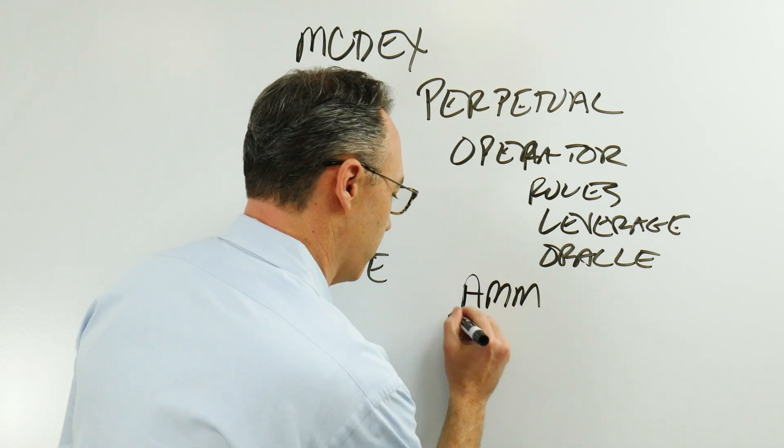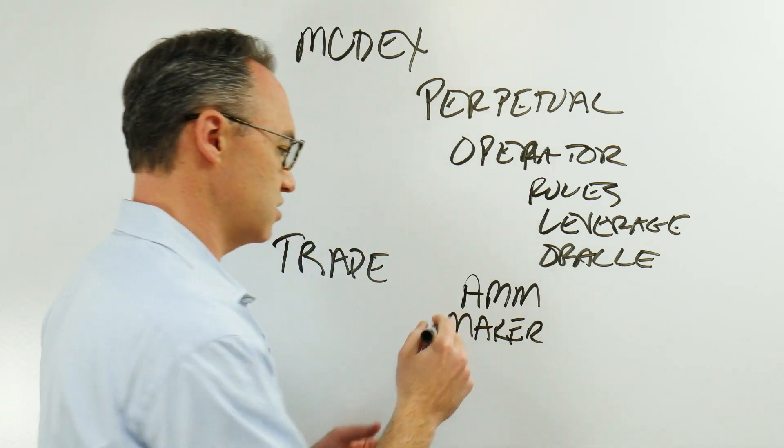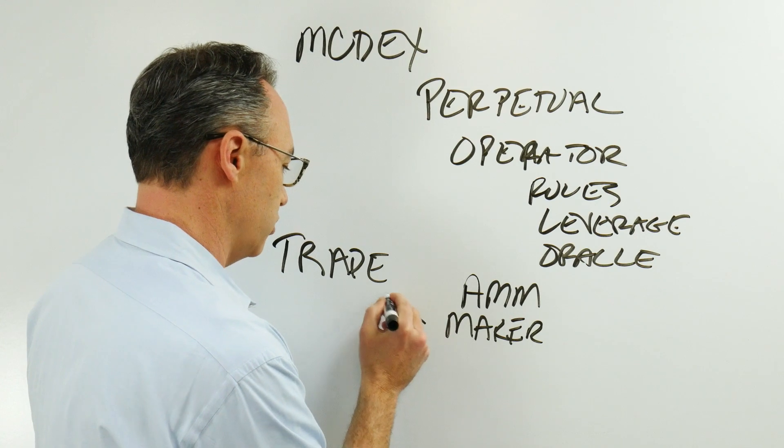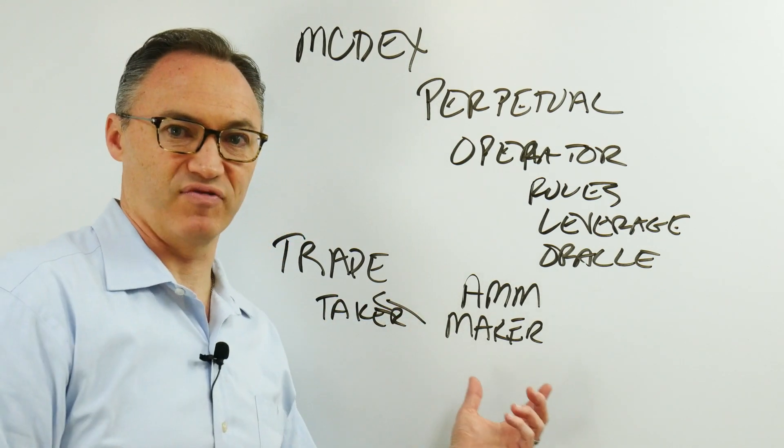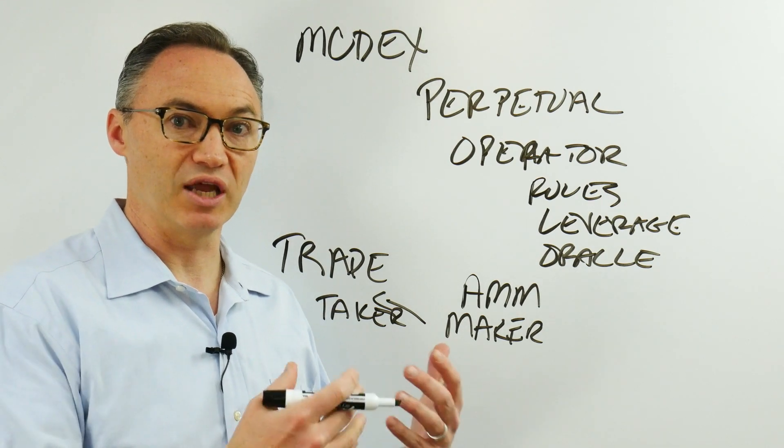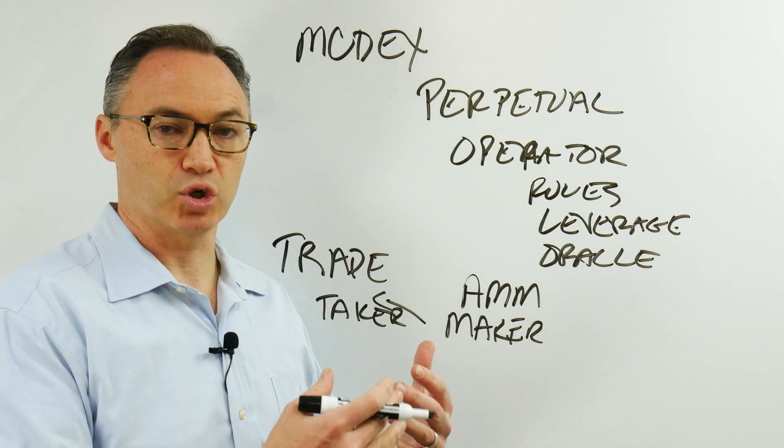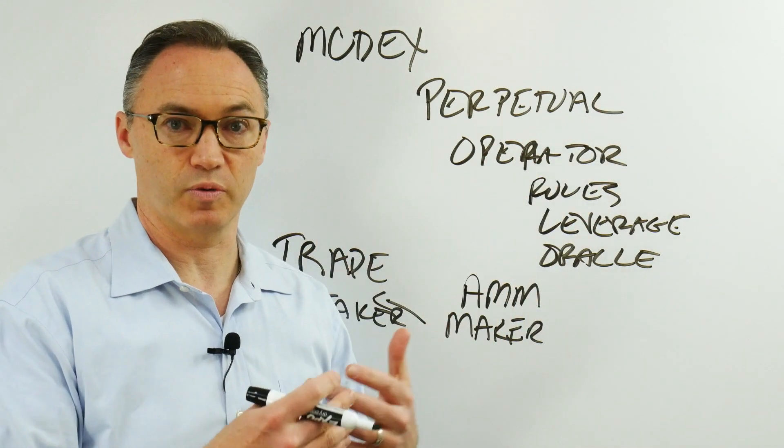is the AMM. So the AMM, the algorithm watching this, is always making the market. The trader is always taking whatever price is available from the AMM. Now the AMM, the algorithm, is obviously going to engineer it to try to make sure that those trying to go long and those trying to go short are close together.